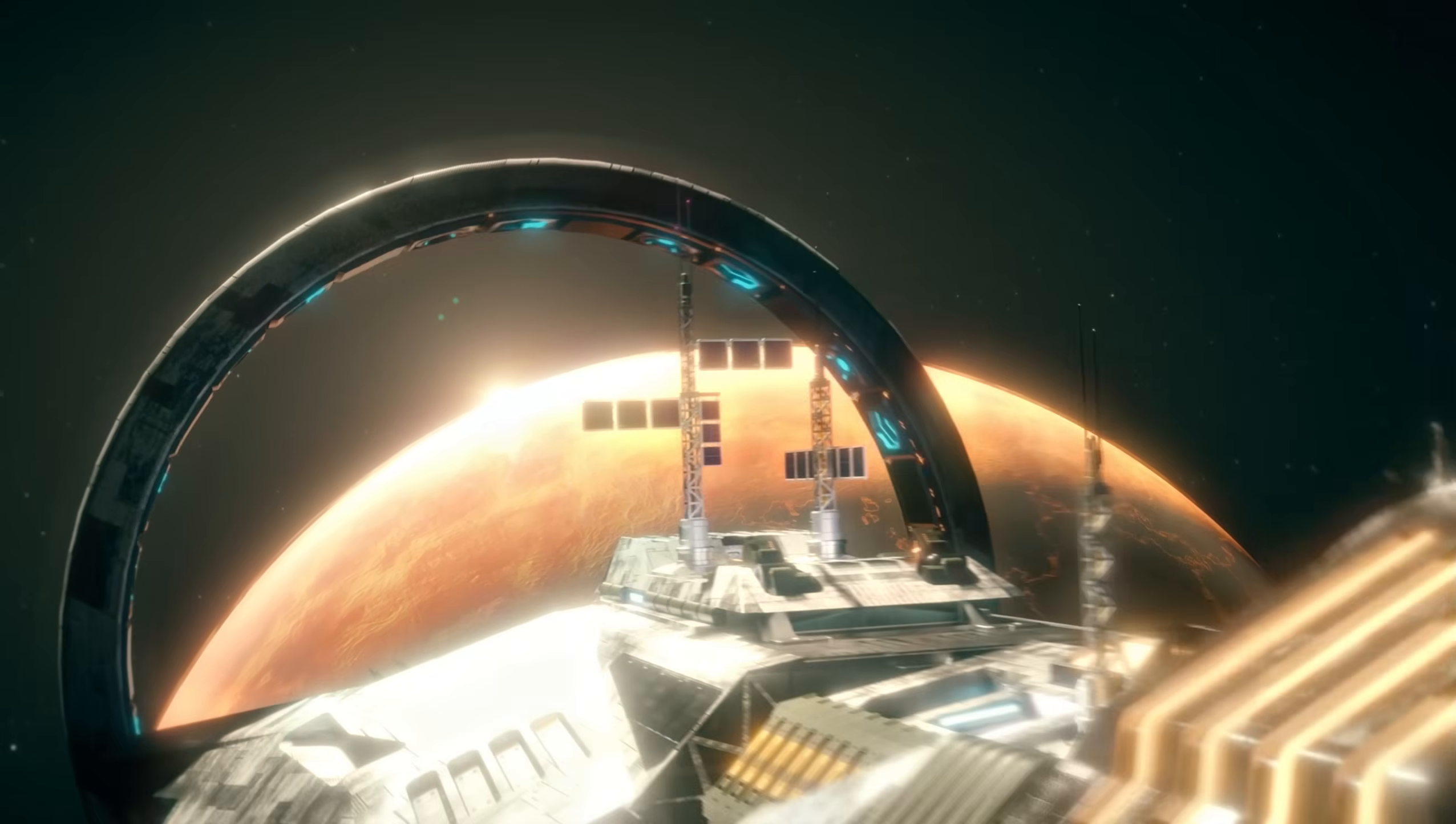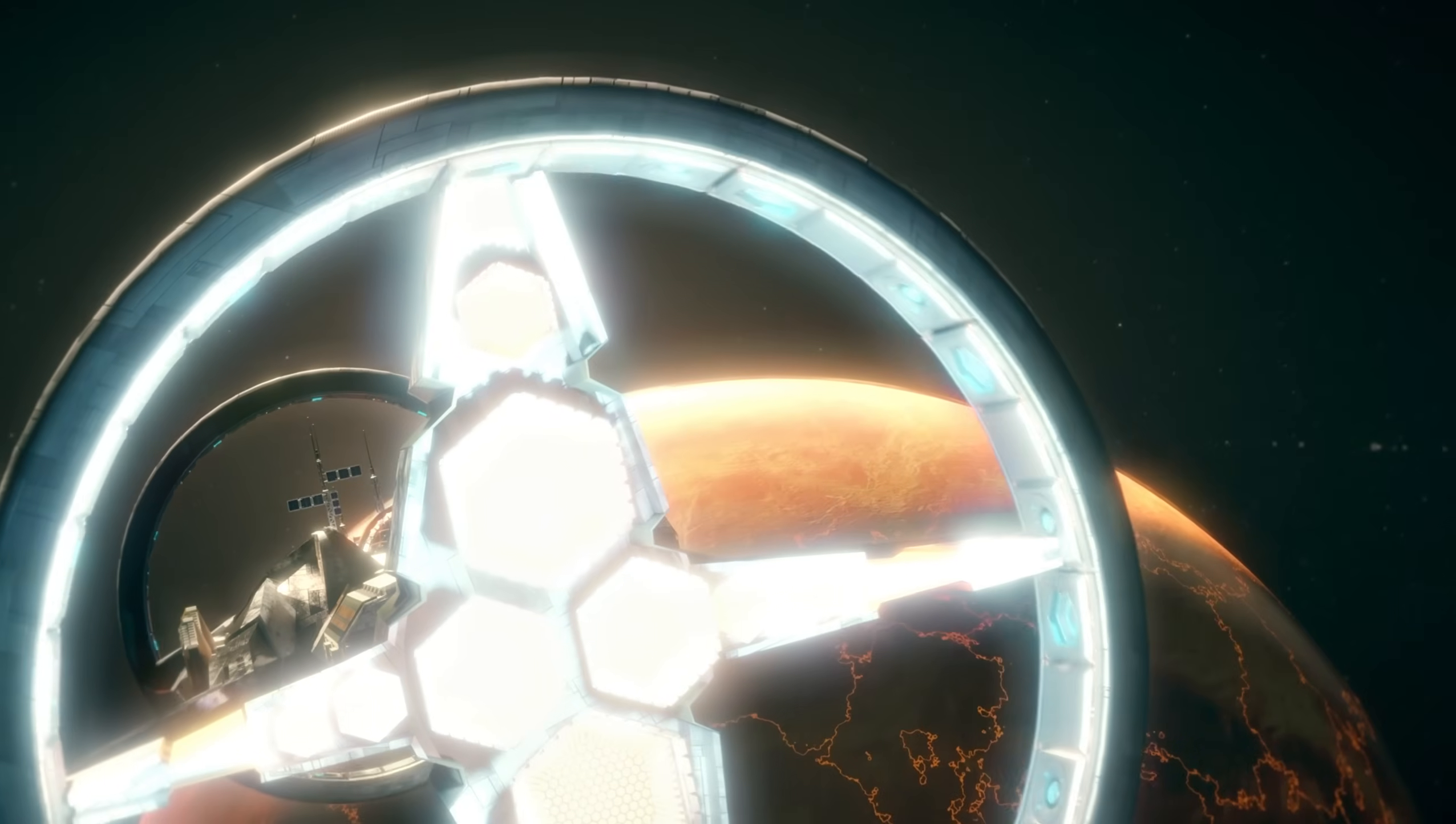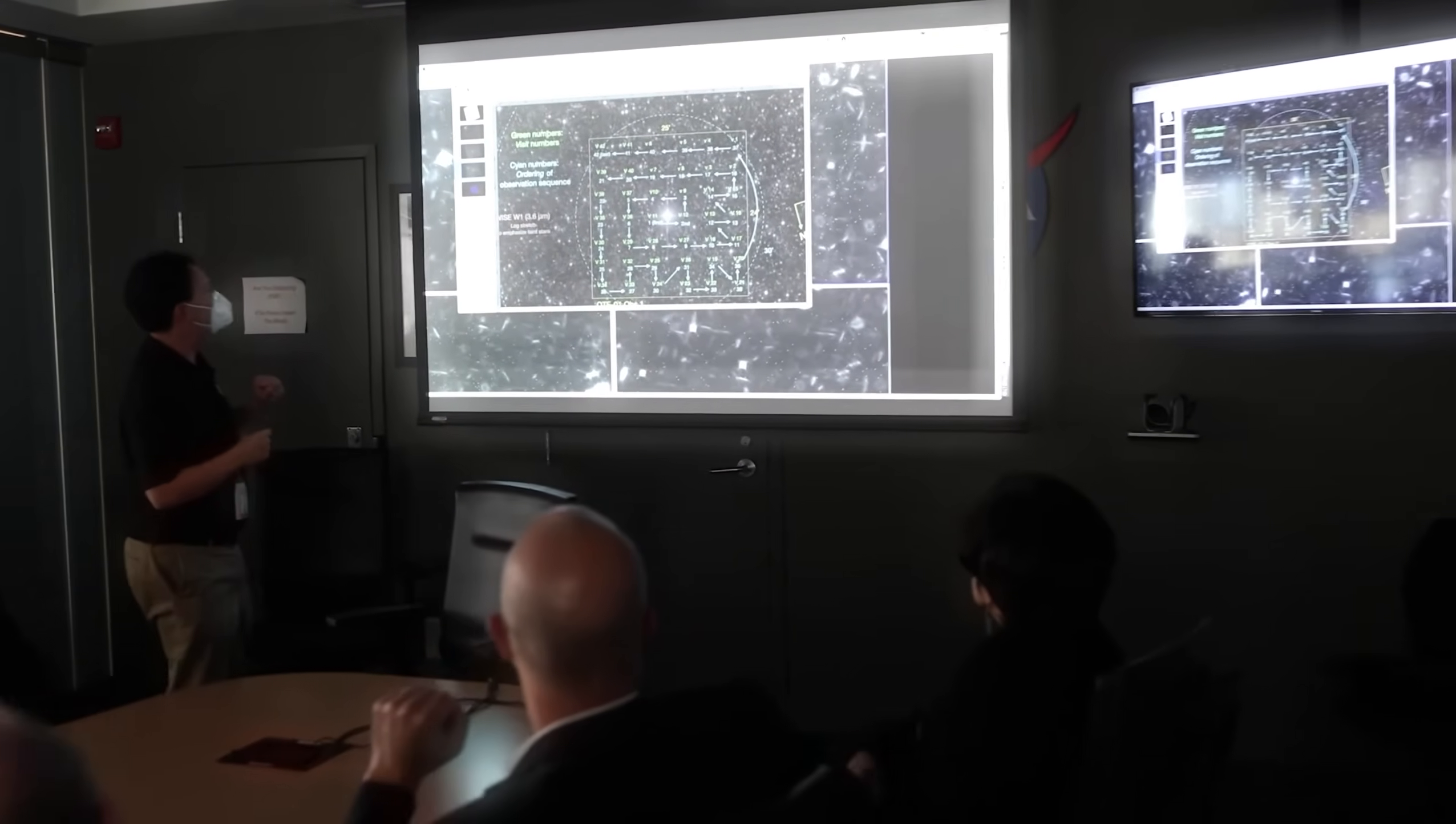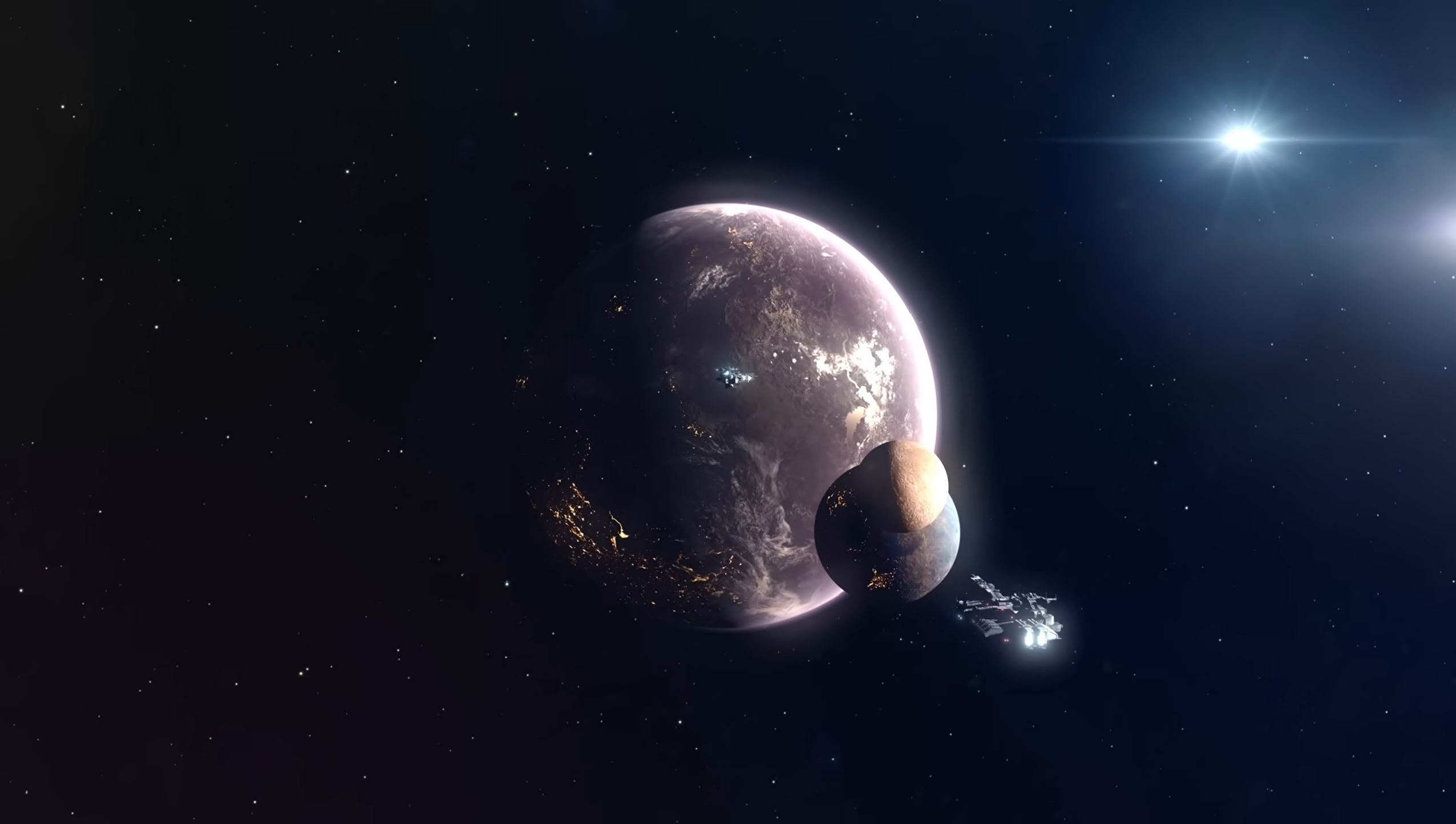The James Webb Telescope is exactly the kind of tool we need to make sense of it all. It is picking up thermal emissions, giving us clues about what might be happening in the planet's atmosphere. But it's clear, we have only just begun to scratch the surface.